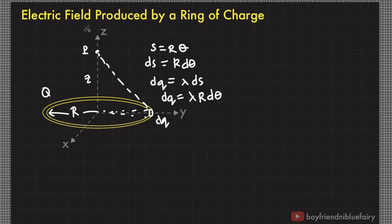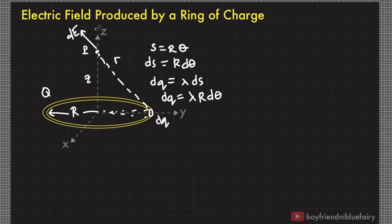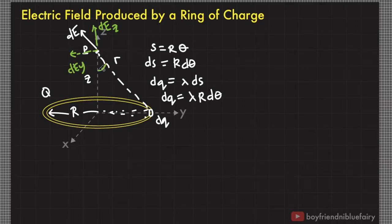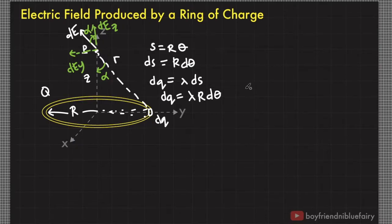The contribution of the infinitesimal element dq to point P is dE, the infinitesimal component of electric field. The distance of point P to dq is r. We can break this dE into components: one component parallel to the z-axis, named dE sub z, and another perpendicular to the z-axis, named dE sub y. If the angle here is alpha, then this angle is also alpha.